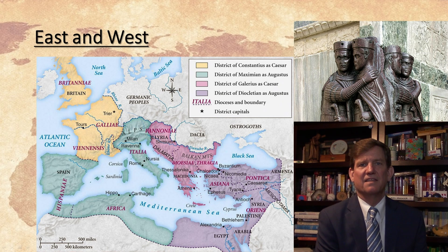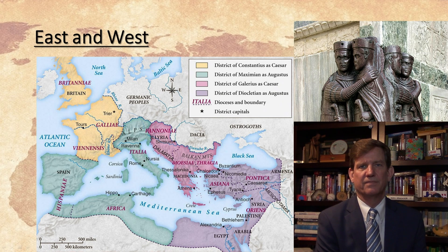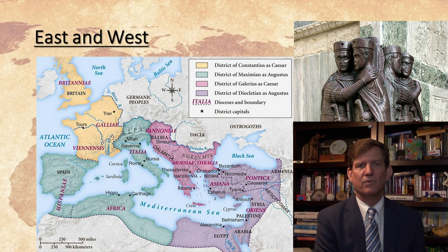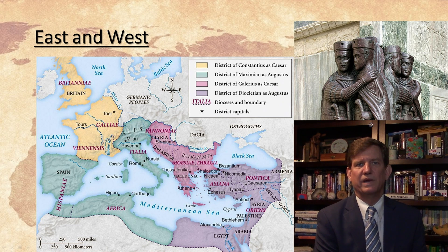Diocletian realized that it was difficult for a single man to rule over an empire that stretched from one end of the Mediterranean to the other. He decided to take on some help and to establish a formal succession. That division separated the Eastern Mediterranean from the Western Mediterranean. There was already an informal division from the ancient languages and cultures of the day — Greek dominated the East, Latin dominated the West. That division only hardened and expanded over the next 1,000 years.